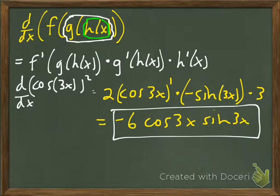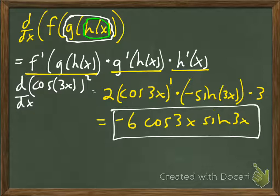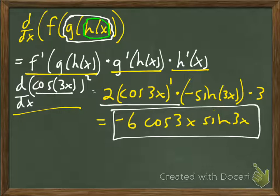We took the chain rule a step further. If we have f(g(h(x))), then we have two inside functions and we have to use the chain rule twice: the derivative of the outside, multiplied by the derivative of the first inside function, multiplied by the derivative of the second inside function. For example, the derivative of (cos(3x))² — the outside function is the power function, the inside is cos(3x). So the derivative is two times cos(3x) to the first, multiplied by the derivative of cos(3x), multiplied by the derivative of 3x.